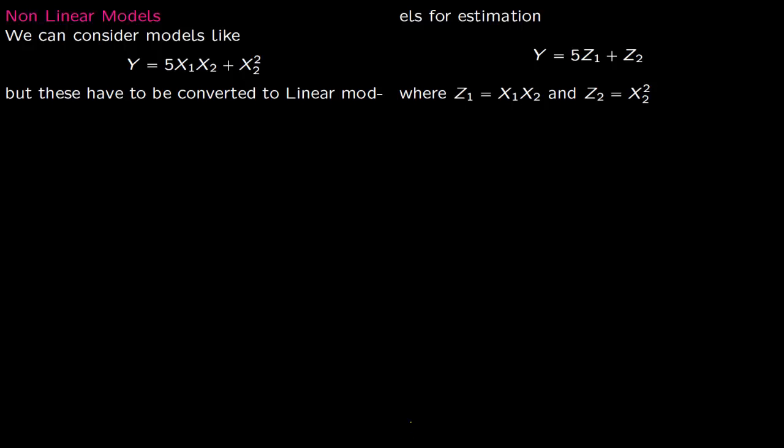Now we consider nonlinear models. Nonlinear models are of this form: Y equals 5 times X1 times X2, notice the multiplication, that is why it is nonlinear, plus X2 squared. So again, these X1 and X2, these are called predictors.